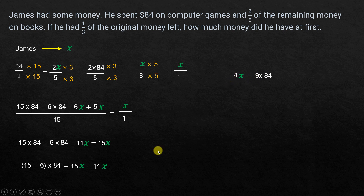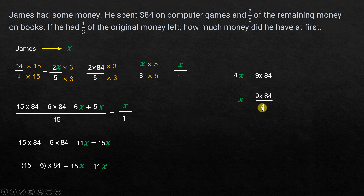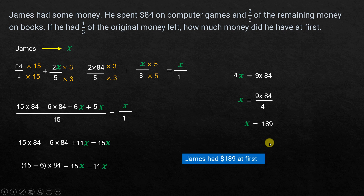So 4X equals 9×84. Dividing both sides by 4: since 84 is divisible by 4, and 4×21 = 84, we get X equals 9×21. That gives 189. So the amount of money that James had in the beginning was $189.